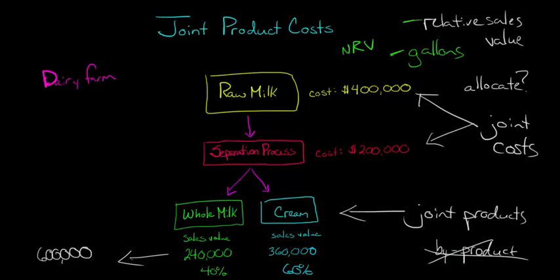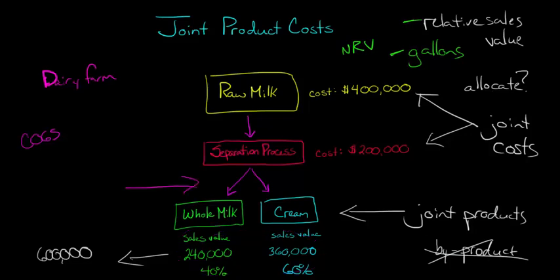Here's something very important in cost accounting. When we're allocating joint costs, we might need to calculate cost of goods sold, or perhaps there's a lawsuit requiring us to allocate costs to specific products. The point where these become two unique products is called the split-off point. That's the point in the process where the joint products can be recognized as uniquely separate products.